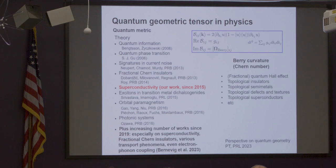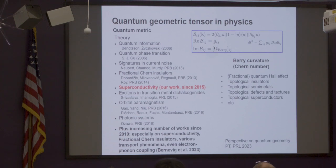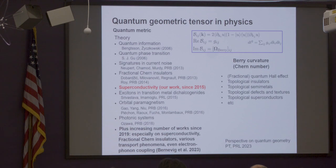Berry curvature is already very familiar to everybody — there are like a million experiments and theory papers about it. The quantum metric emerged in physics very recently. Up to around 2019 I was able to basically list all the theory papers where it had been considered as significant; our superconductivity work started in 2015. But after 2019 it has kind of exploded — people are now really looking at it.